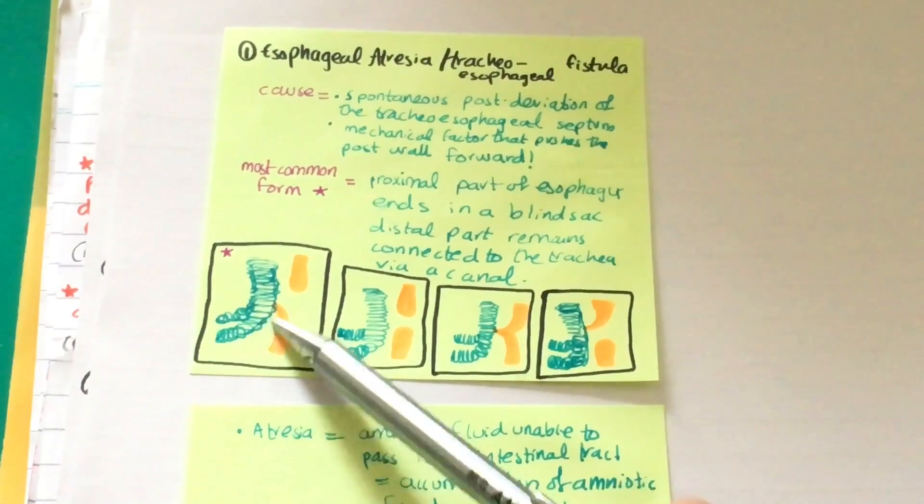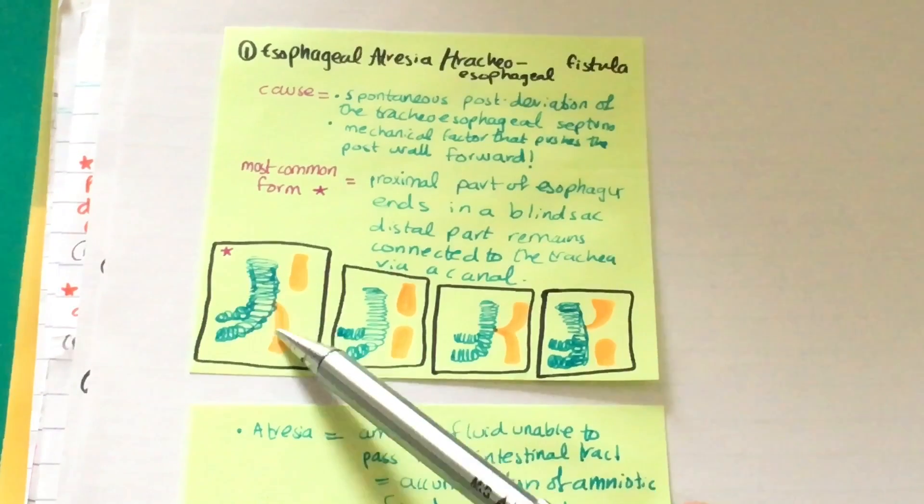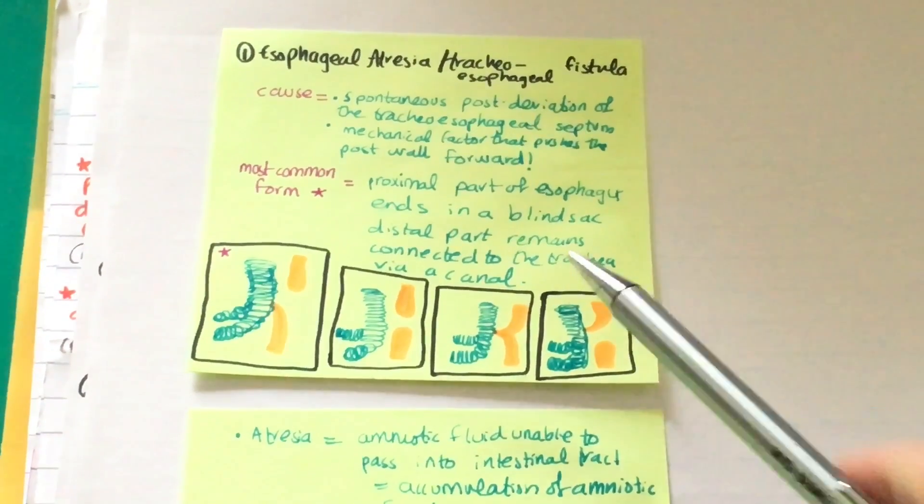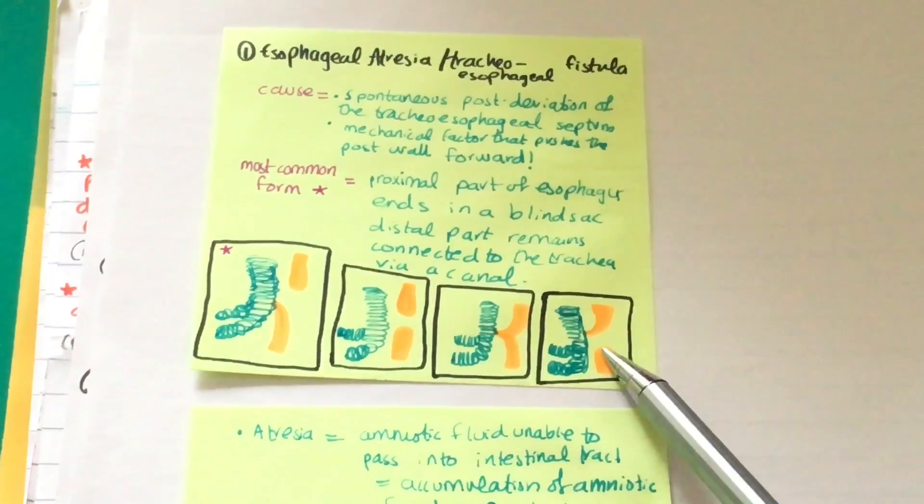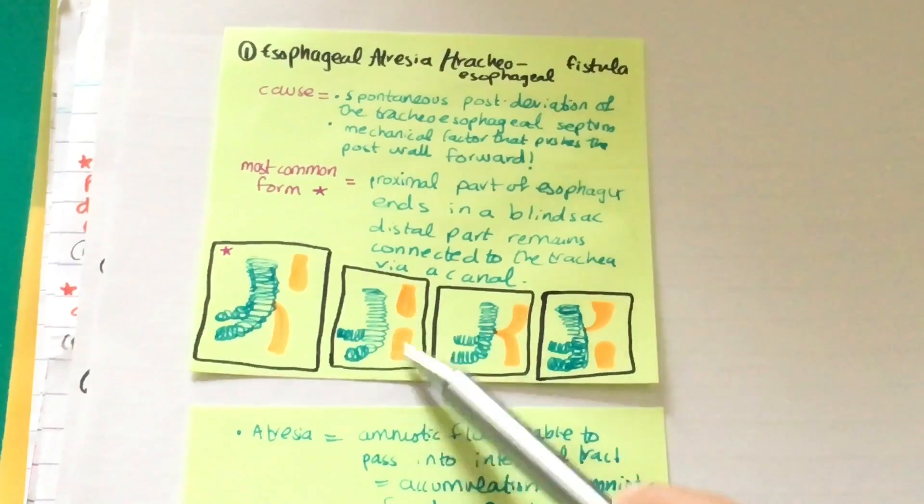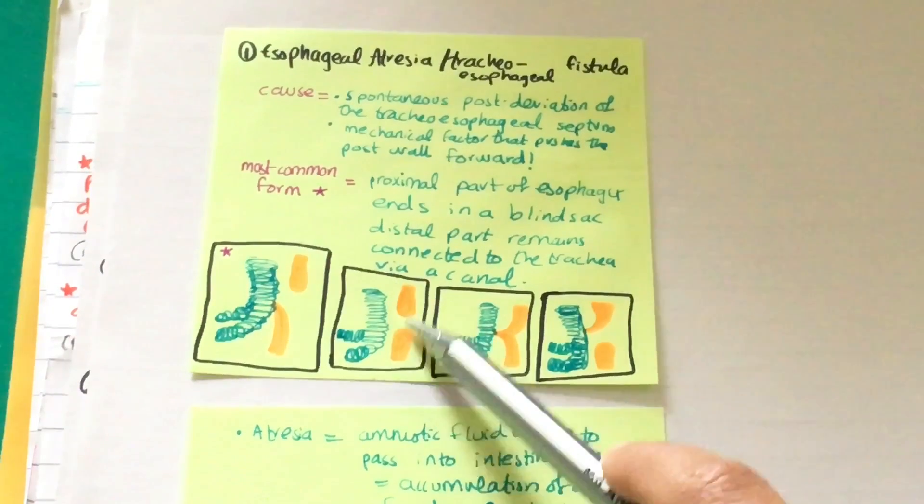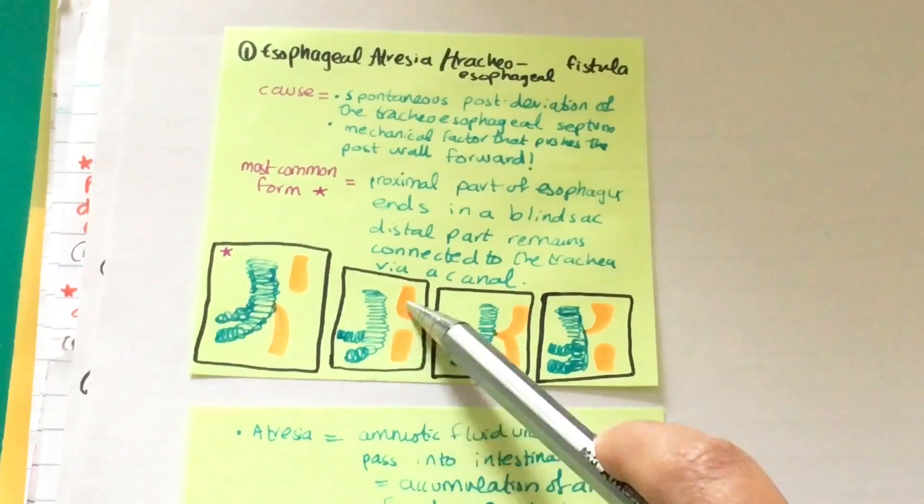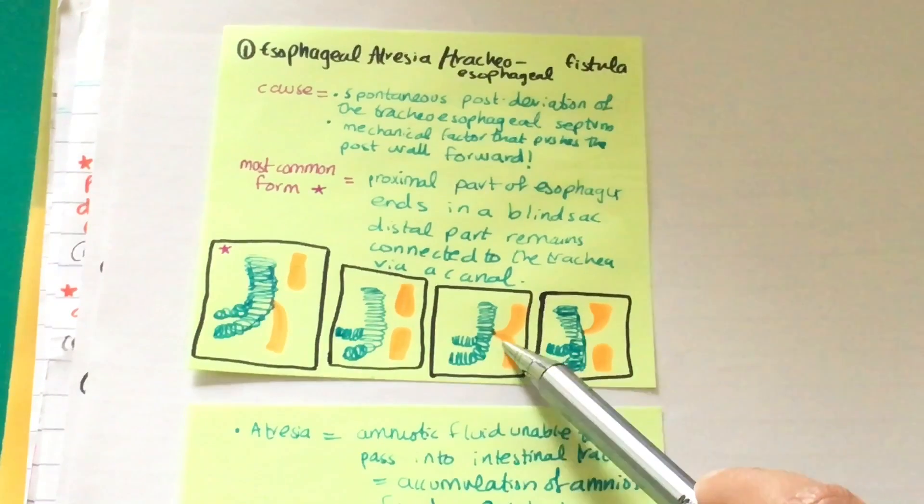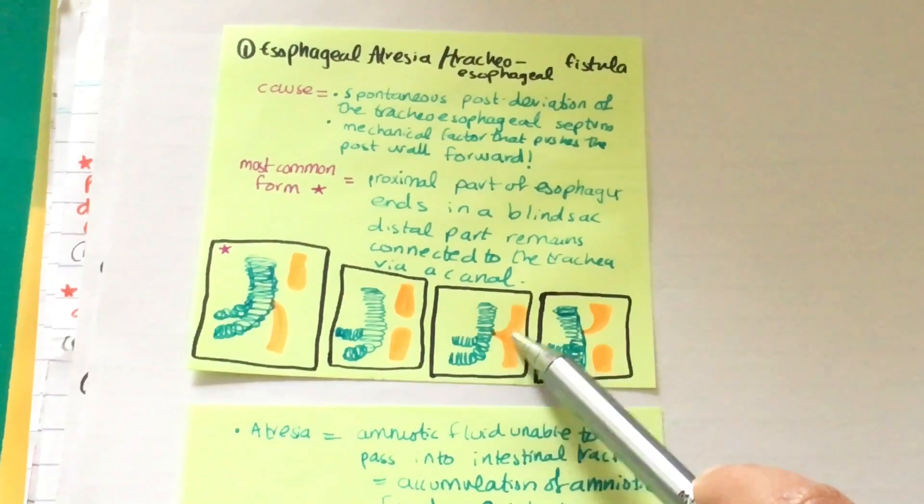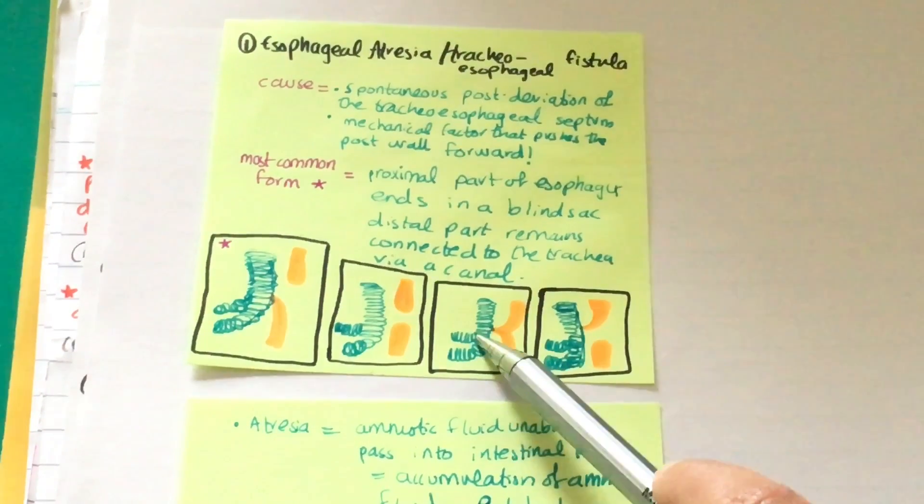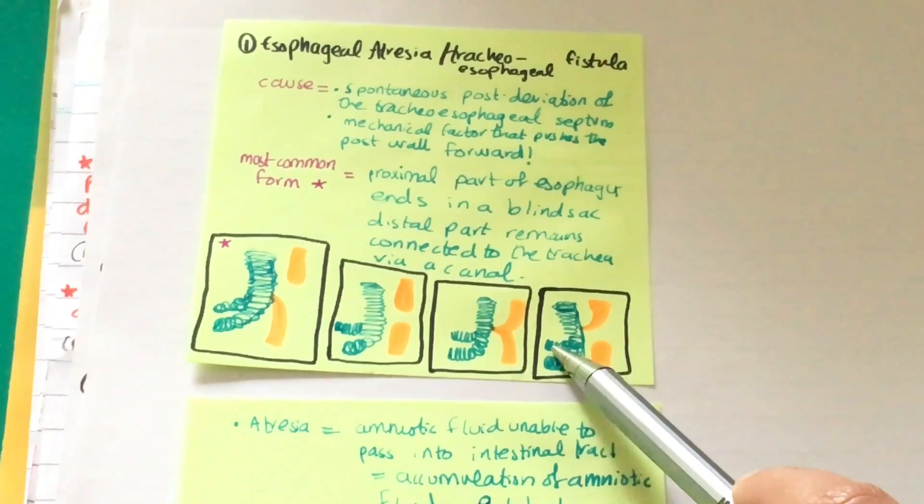These are the other forms. In this one, both ends are not connected to each other or the trachea. In this form, both ends are connected to the trachea. In this one, one part is connected and the other part is in a blind sac.